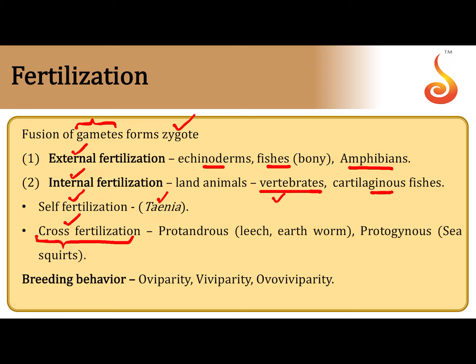Hermaphroditic or bisexual organisms exhibit cross fertilization by exhibiting protandry and protogyny. In protandry, even though an animal is bisexual, the male reproductive system matures first and the female reproductive system matures later, as in the case of leech and earthworm. In protogyny, the female reproductive system matures first and the male reproductive system matures later, so there is no synchrony in the maturation of the male and female parts.